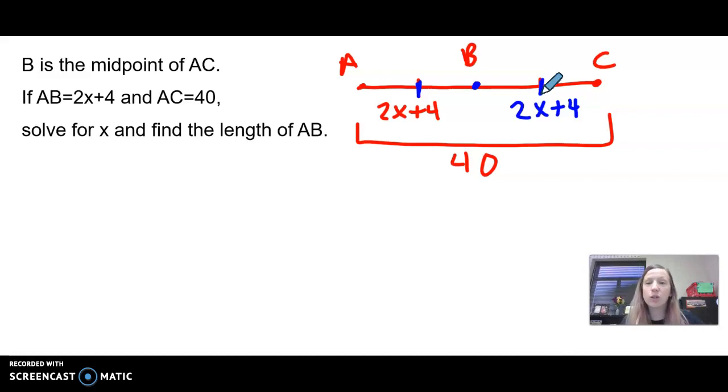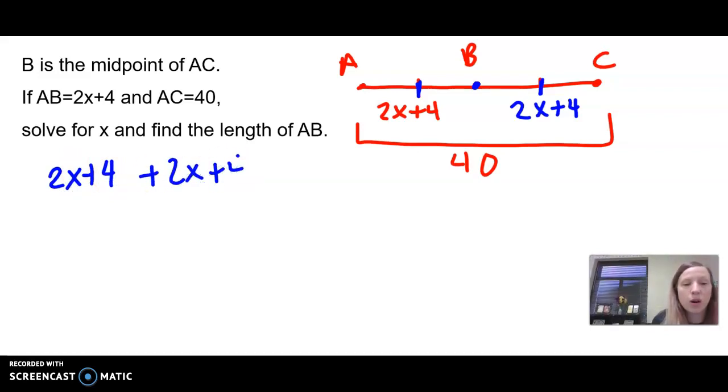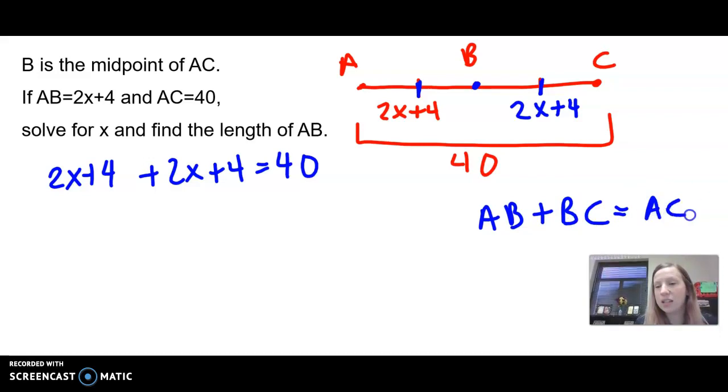Now we can set up an equation using the segment addition postulate. 2x plus 4 plus 2x plus 4 should equal the entire length, which is 40. What we did, in case you got lost, was we added AB plus BC should add up to the entire length of AC.